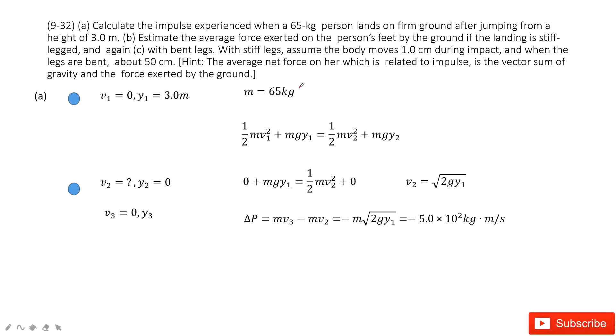Chapter 9 is about linear momentum. We can see a person, the mass of the person is given. They just landed on firm ground after jumping from a height. The initial velocity for the person is given, initial position is given.